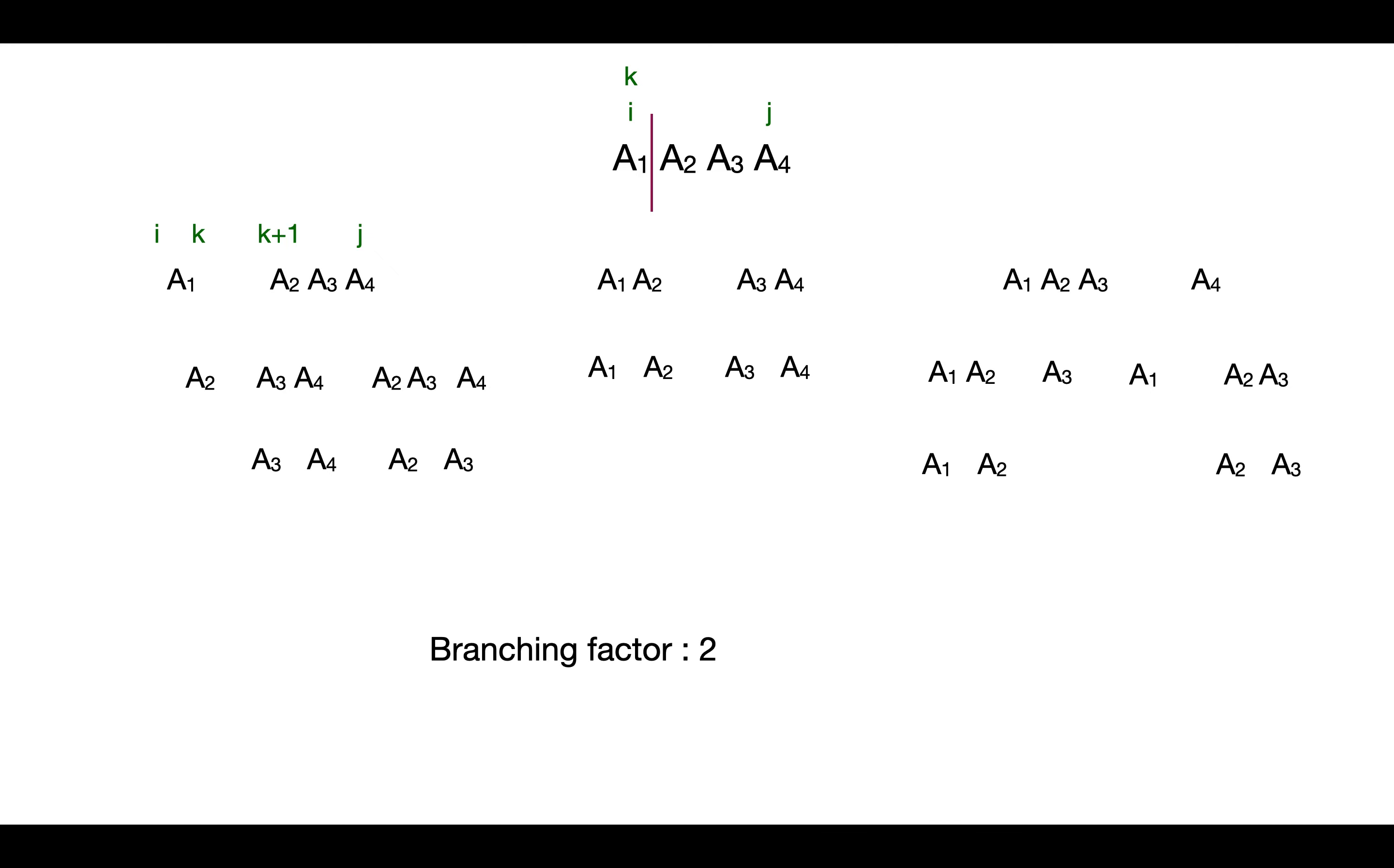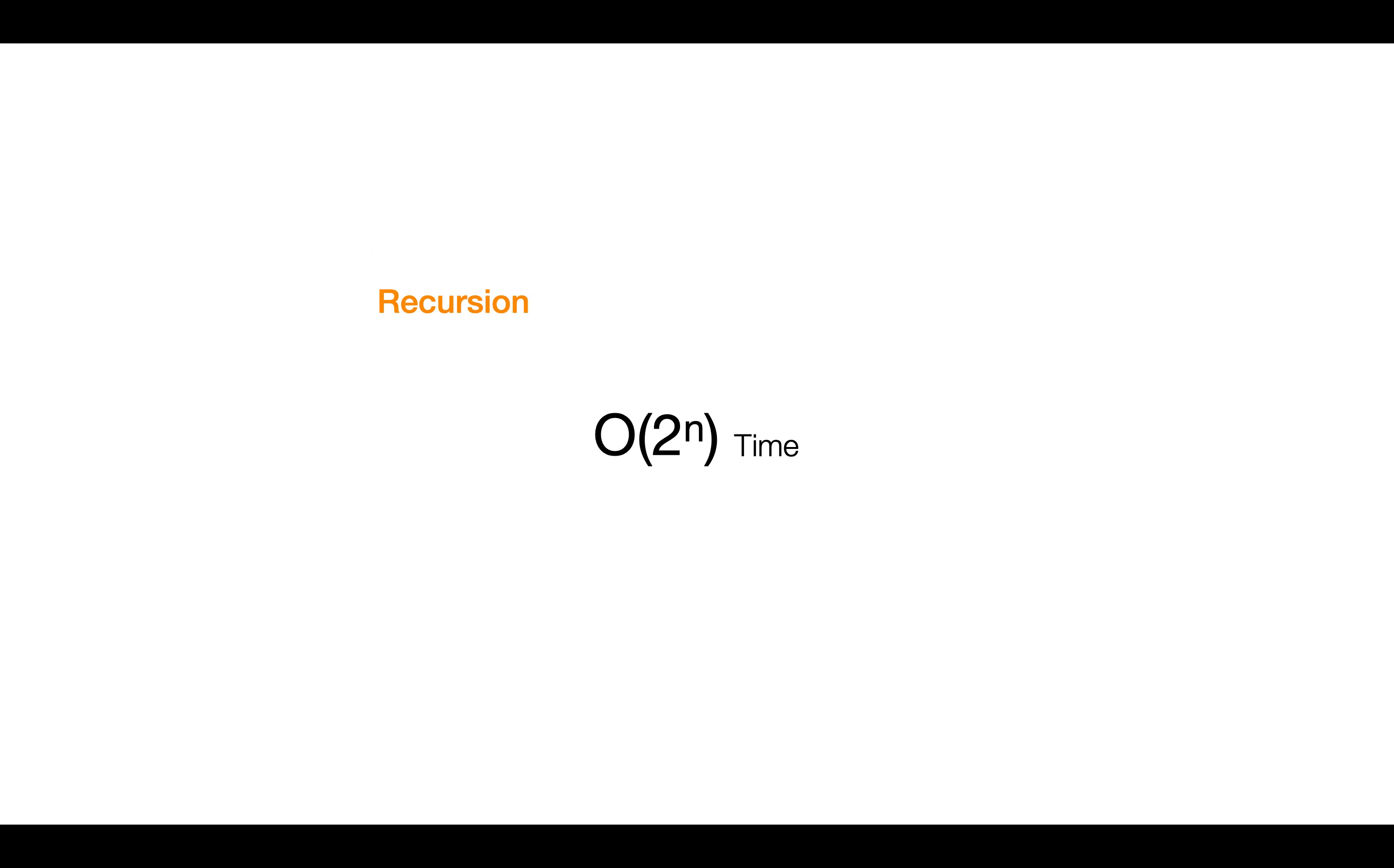So we can say the branching factor is two, and we are doing this until j, that's basically the number of total given matrices, which is n. So the complexity would be two to the power n, that's exponential.